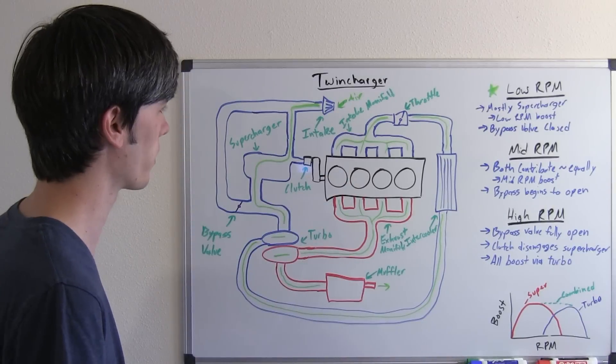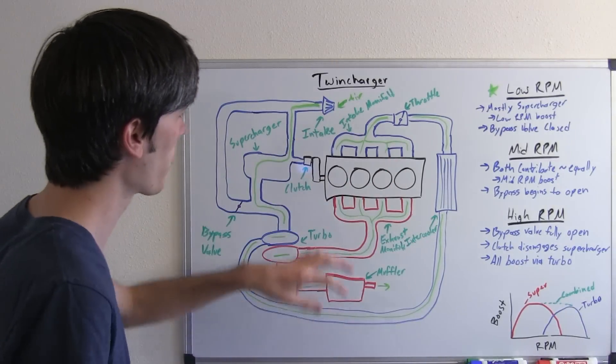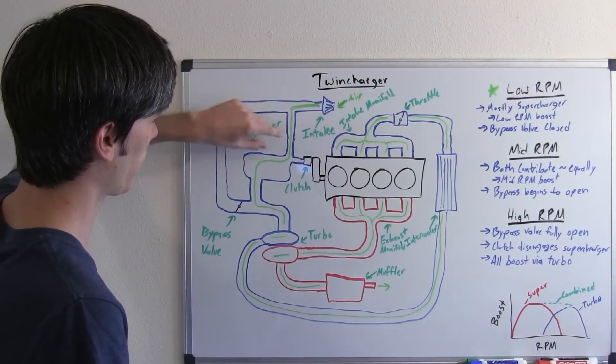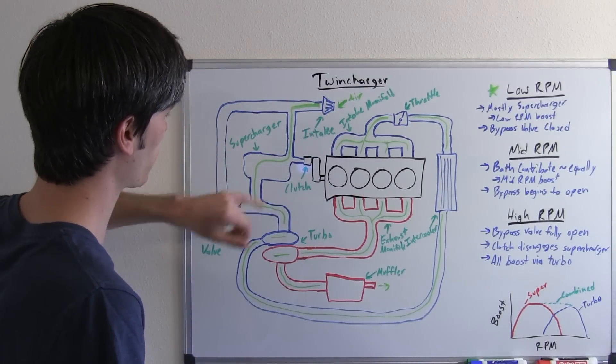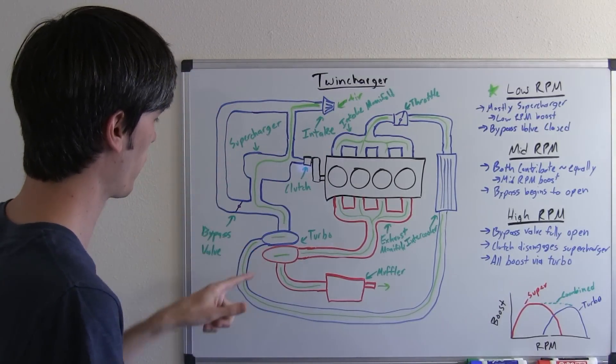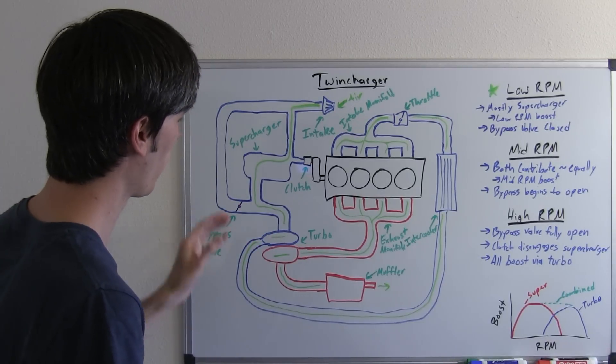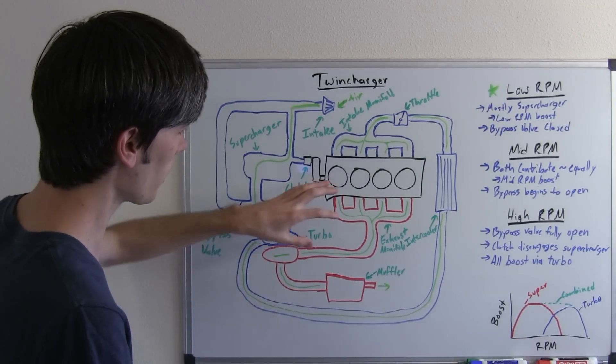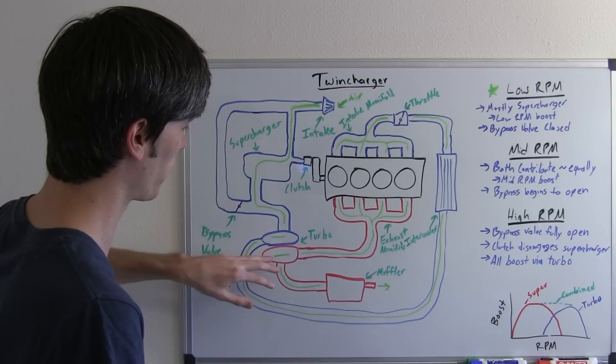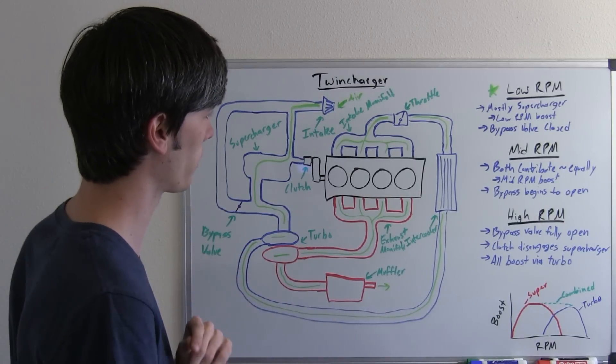So basically what we've got going on here is here's our engine, here's our intake. It can either channel to the supercharger directly or channel to a turbocharger, and there's a bypass valve here which can open or close. Now we've got our exhaust manifold that feeds directly to the turbo and then out the exhaust.